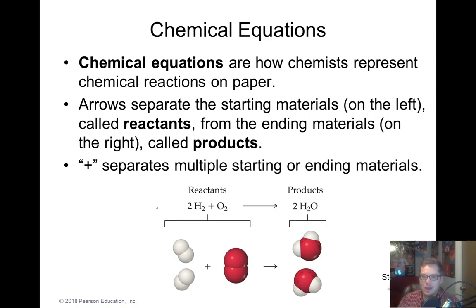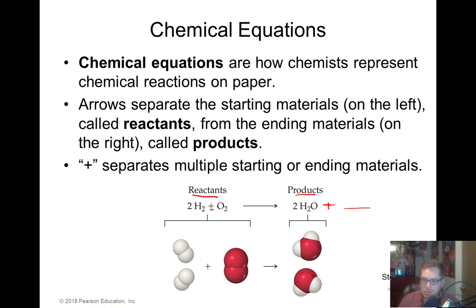When we're looking at chemical reactions, it's always helpful to write them down so we can communicate and picture what's going on. We use chemical equations to write out chemical reactions. Reactants go on the left side and products on the right side — reactants are what we're starting with and products are what we're ending with. We use an arrow to separate them, never an equal sign.